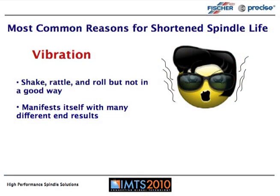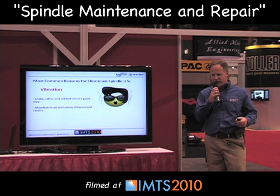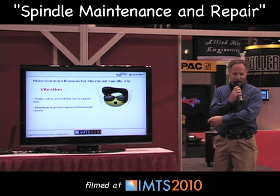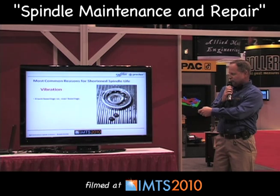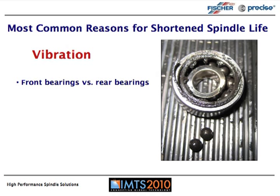Vibration tends to be a catch-all explanation when people have issues with spindles — you typically just hear 'due to high vibration.' But vibration is just an end result. It manifests itself in many different ways and there are various things to consider. Similarly, bearing failure is typically an end result, not a cause or a symptom — it's basically manifesting some other issue related either to the machine or to the spindle itself.